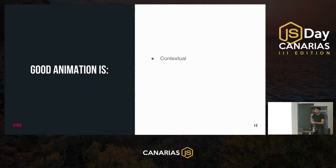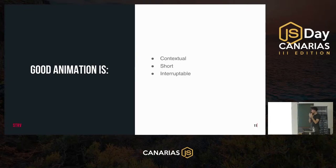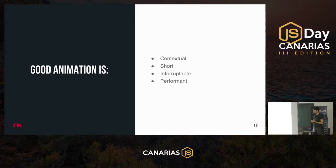First of all, we need to define what a good animation actually is. Good animation is contextual — it helps explain things in context, so it shouldn't be meaningless and distracting. It should be short so it doesn't prevent the user from performing their action; animations of 300 milliseconds or less are usually preferred. Animation should be interruptible — if we transition from one page to another and the user clicks back, we don't want to wait for the whole animation to finish.